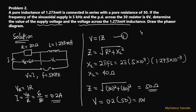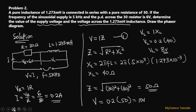Now let's find the voltage across the inductance: VL = I × XL. We already know the current is 0.2 and the inductive reactance is 40 ohms. So VL = 0.2 × 40 = 8 volts. The voltage across the inductor is 8 volts.